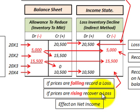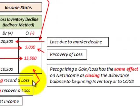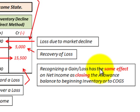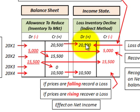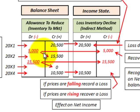Recognizing a gain or loss using this lower of cost or market method has the same effect on net income as closing the allowance balance to beginning inventory or to cost of goods sold. This example showed how to use the allowance or contra asset account when setting up inventory valuation each year, and how to reduce or increase this allowance account based on the balance required in the valuation account from period to period.